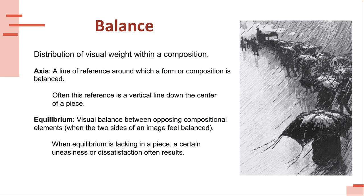Balance is based off of an axis — some kind of axis — which is a line of reference around which the composition is balanced. A lot of times for a symmetrical piece it's right down the middle, a vertical line down the center. In this example, the axis is a little bit off to the right. And then you have equilibrium, which is visual balance between opposing compositional elements. In this case, the very dark line of figures walking in the rain versus essentially negative space. So we have a visual balance between the heavy dark figures and this light, more washed-out background. Even though this is asymmetrical, we still have a sort of even distribution of visual weight.